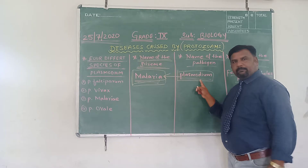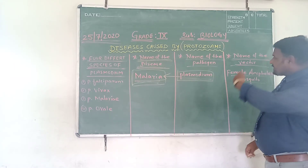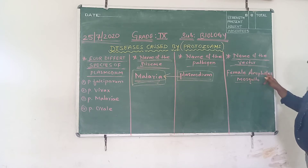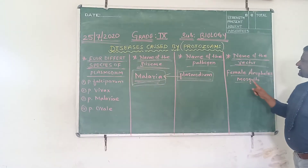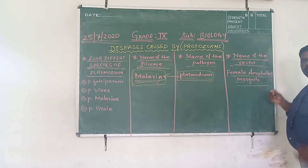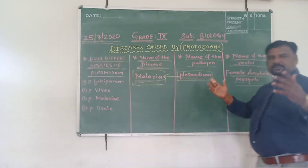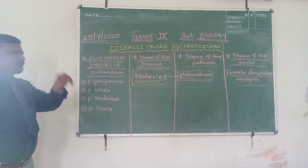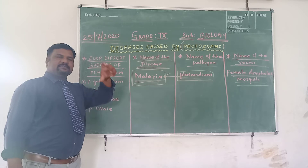Plasmodium is the pathogen of malaria. The vector for malaria is the female Anopheles mosquito. The pathogen for malaria is Plasmodium, and the vector is the female Anopheles mosquito. Now the question may arise in your mind: why the female Anopheles mosquito, why not the male Anopheles mosquito?